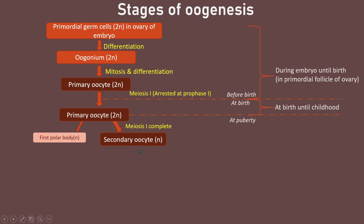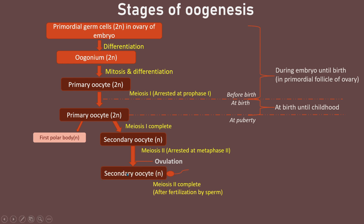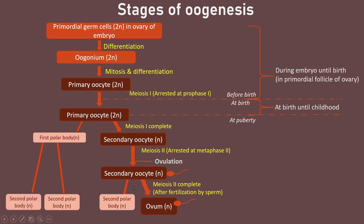The secondary oocyte continues into meiosis II but is arrested at metaphase II. It is then released from the ovary into the fallopian tube through ovulation. If the secondary oocyte is fertilized by a sperm in the fallopian tube, it completes meiosis II, producing a haploid second polar body and a haploid ovum. The ovum is only produced after fertilization by a sperm.